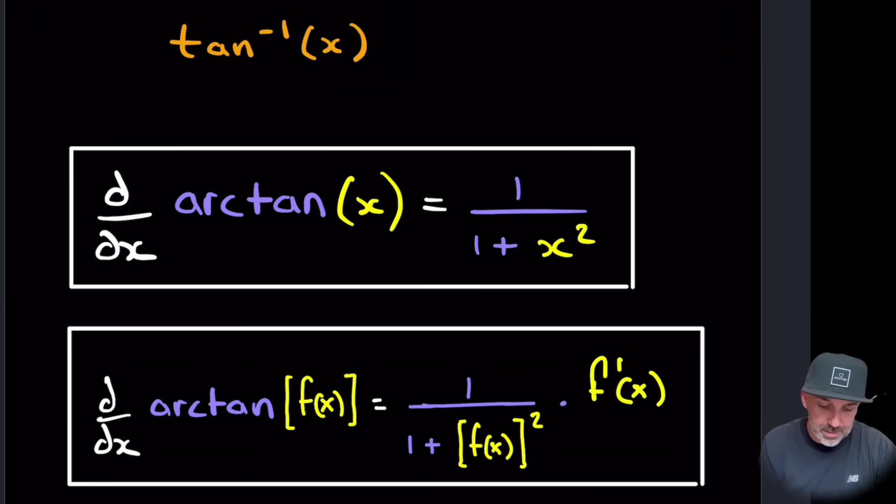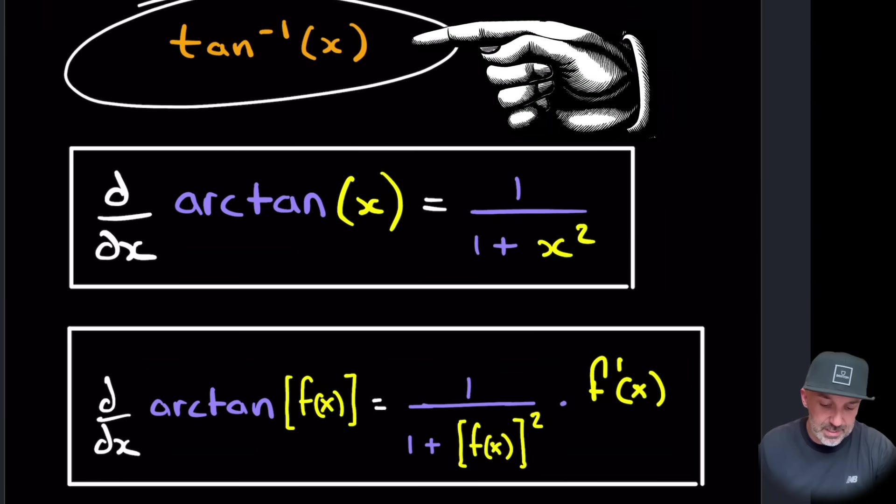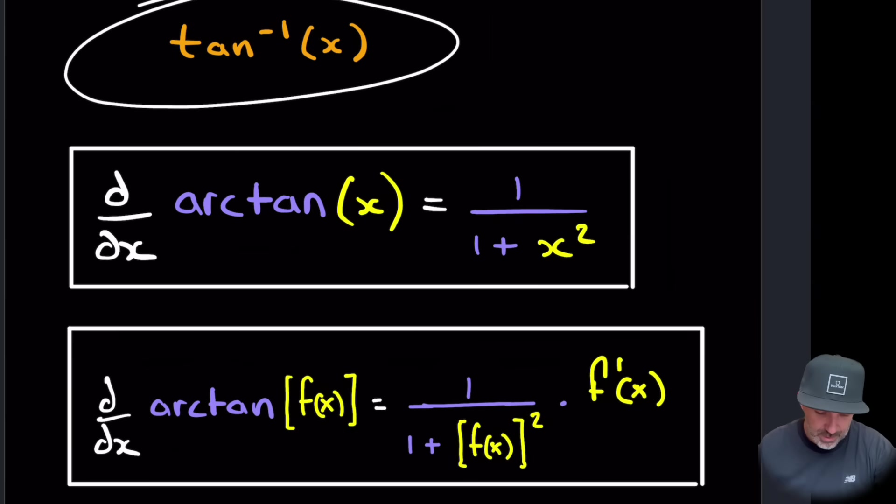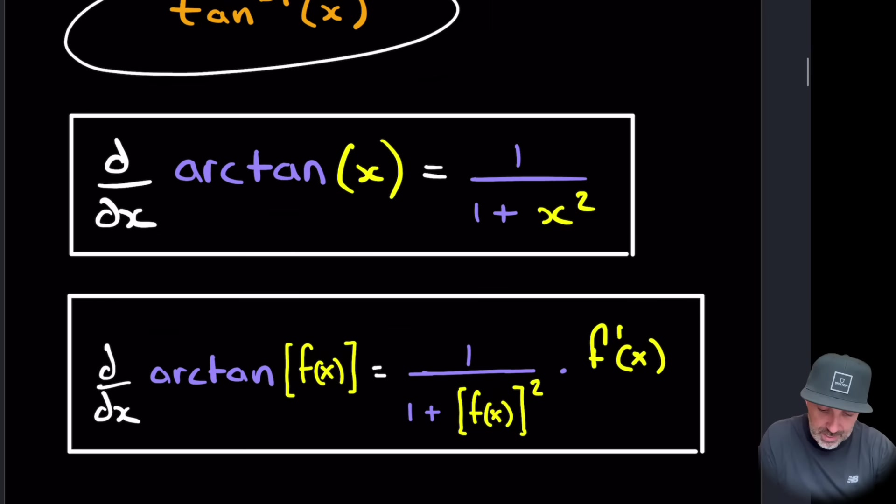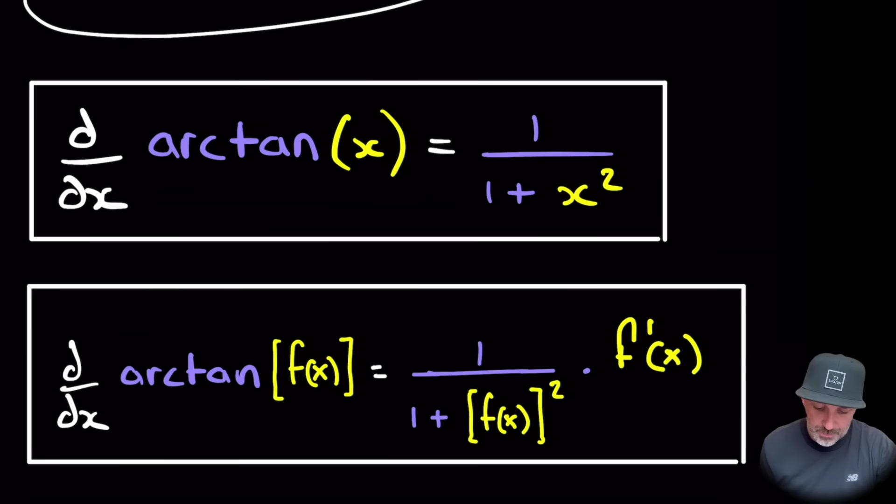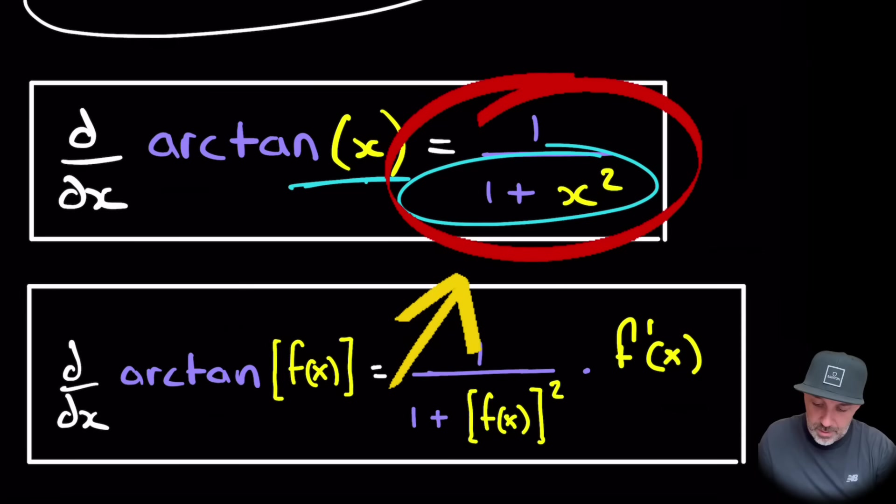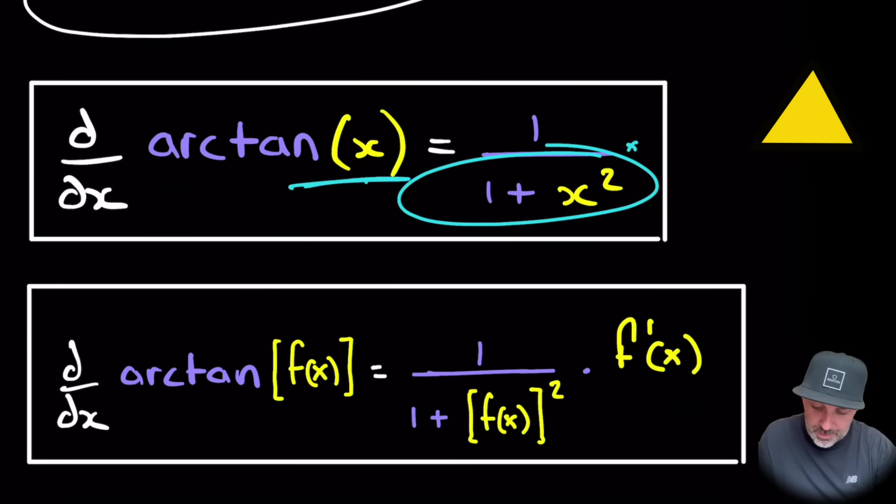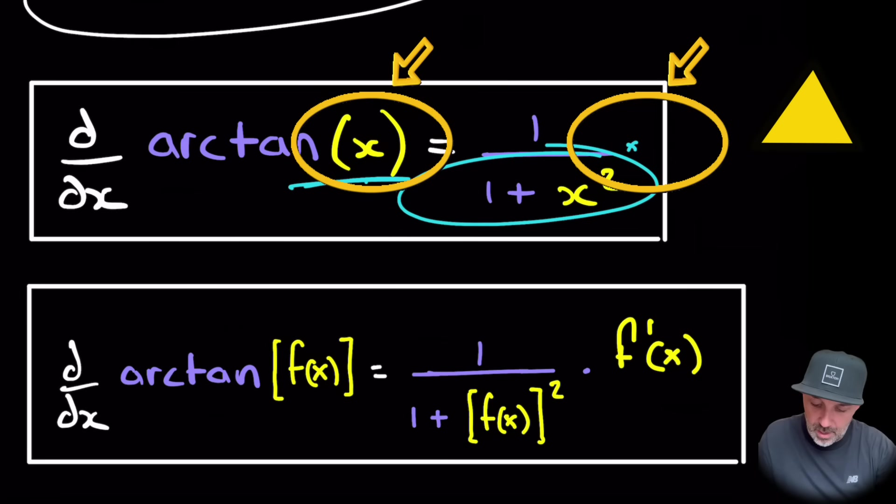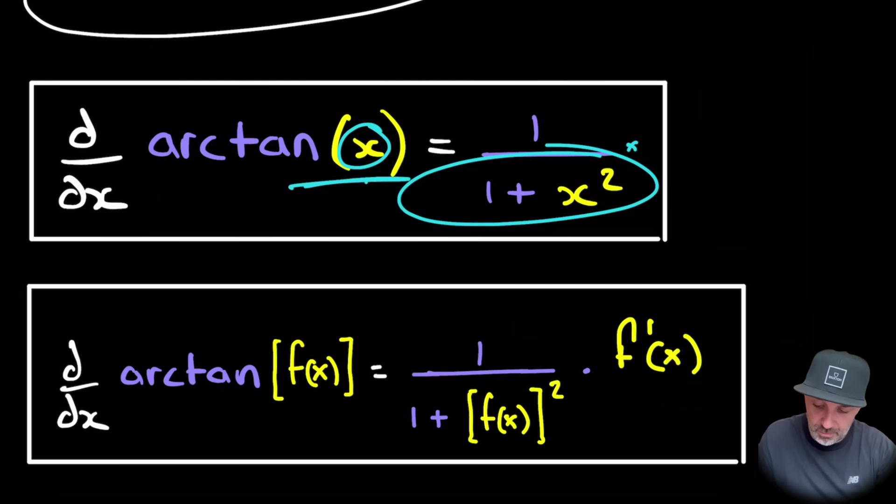Okay, so don't forget that arctan is the inverse of tan, which is exactly the same as saying tan to the minus 1. Now, as I said in the introduction, be careful because most textbooks say that arctan of x is just equal to this. But what they're not showing you is that you have to multiply by the derivative of whatever this x is. Now, in this case, the derivative of that is just 1.